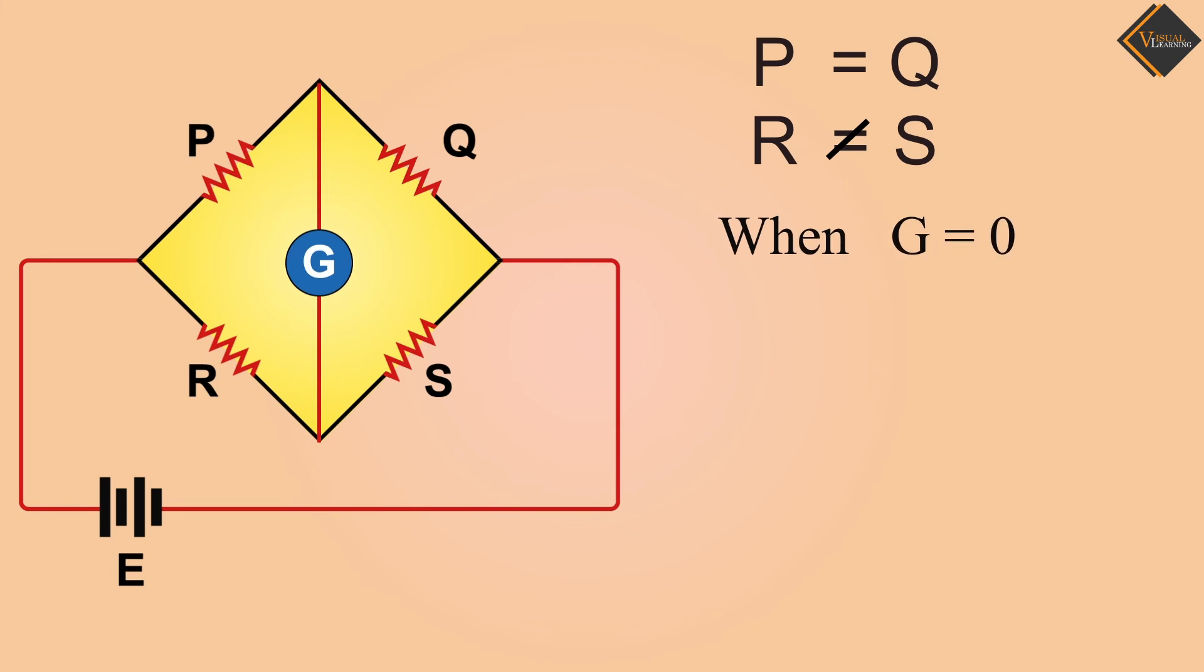When the current becomes zero, we note the value of the variable resistor S. Now, using the Wheatstone Bridge principle, we can calculate the value of unknown resistance R.